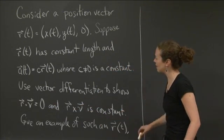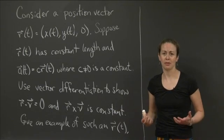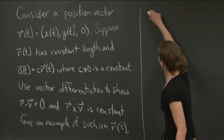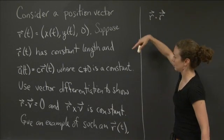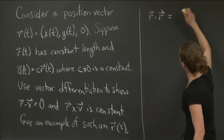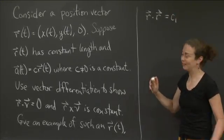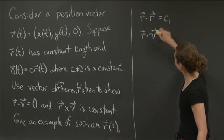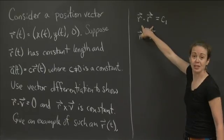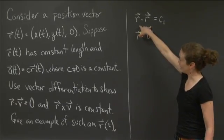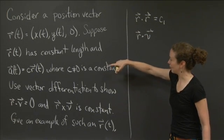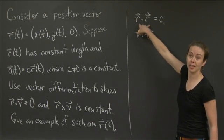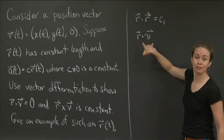Let's figure out how to show that r·v = 0. As you think about this problem, remember what you know: r·r is constant. I'll call that c1 — a different constant than my c, maybe. I know r·r is some constant, and I want to show something about r·v. The only dot product relationship I have is this constant-length condition. So I somehow have to use r·r = c1 to figure out something about r·v.